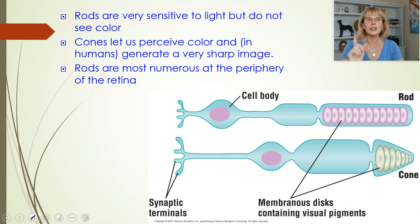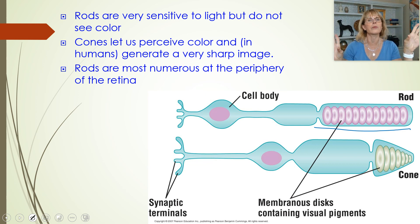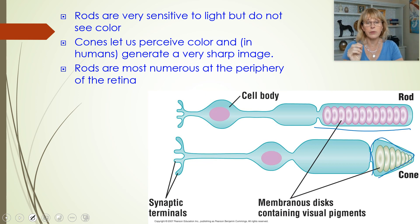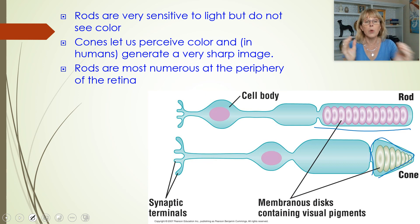Remember rods and cones. Rods are very sensitive to light, but they only detect one color. When we experience vision in very dim light, all the colors go away and we see in black and white or shades of gray. Cones let us see in color and in humans they develop a very sharp image; however, they need a lot of light to fire off. That's why cones are very useful for daytime animals like humans, not so useful for nighttime animals like a puma. Rods are found in humans mostly in the periphery of the retina, and the closer you go towards the fovea, the more cones you see — right at the fovea, it's all cones, no rods.